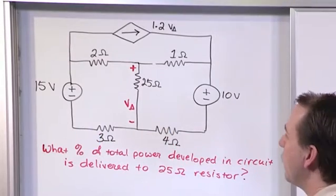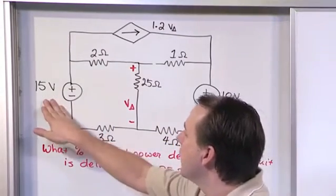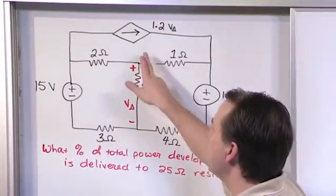Fairly simple looking problem, but the devil's in the details a little bit. What we have is a 15 volt constant source, a 10 volt constant source, resistor network, and then up here,